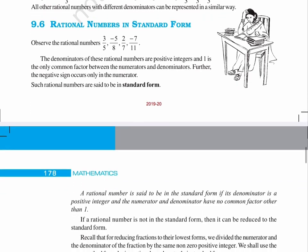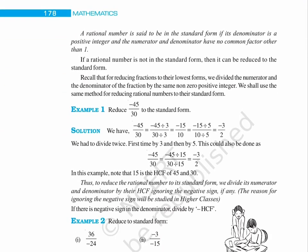Page 178. A rational number is said to be in the standard form if its denominator is a positive integer and the numerator and denominator have no common factor other than 1. If a rational number is not in the standard form, then it can be reduced to the standard form. Recall that for reducing fractions to their lowest forms, we divided the numerator and the denominator of the fraction by the same non-zero positive integer. We shall use the same method for reducing rational numbers to their standard form.